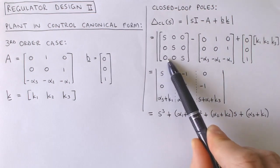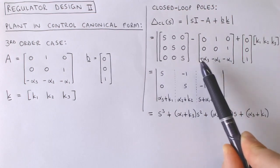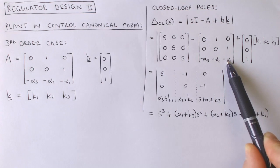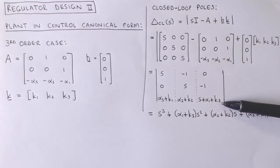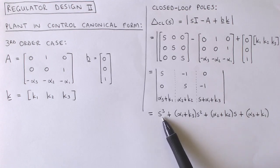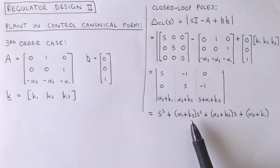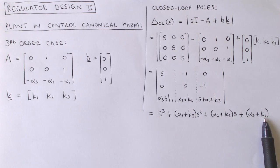For our case, this is SI, this is matrix A, this is vector B, and this is the feedback gain vector K. We now combine these matrices and calculate the determinant, which results in this characteristic polynomial. The characteristic polynomial is now given in a very convenient form, where each coefficient is a function of only one of the elements in vector K.